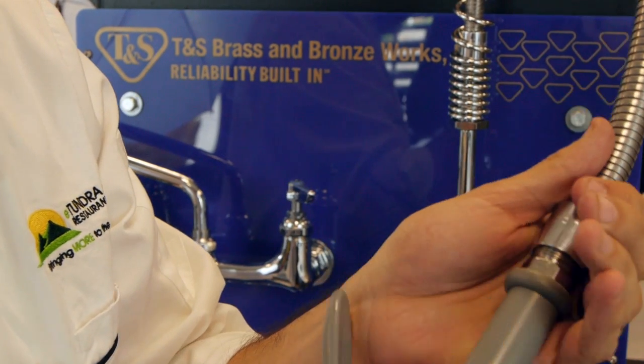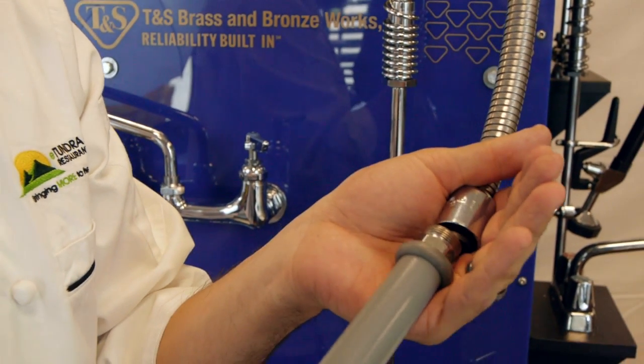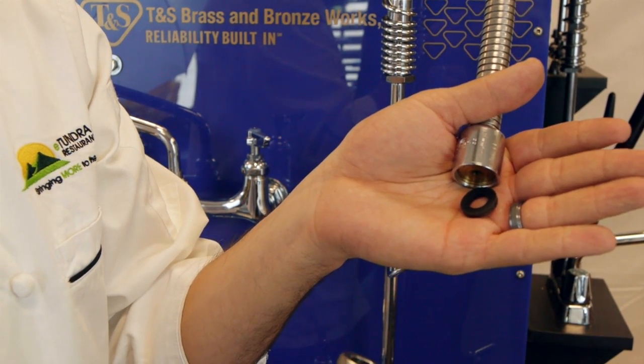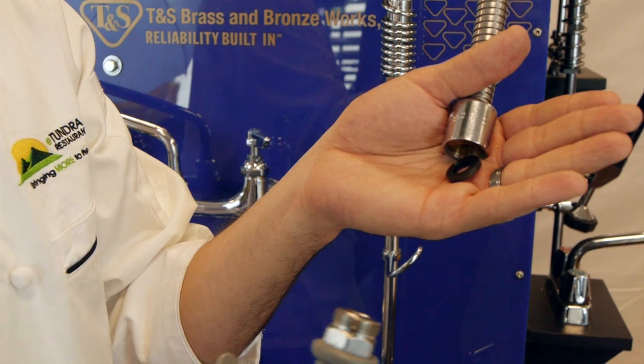So careful when unscrewing this pre-rinse, because the washer just sits there. And there's that washer. So if it's leaking on that side, that's the washer that's going to need to be replaced.